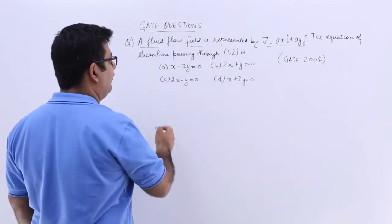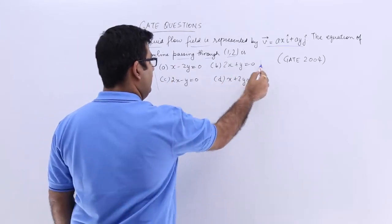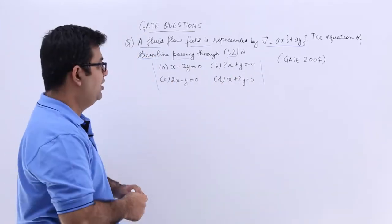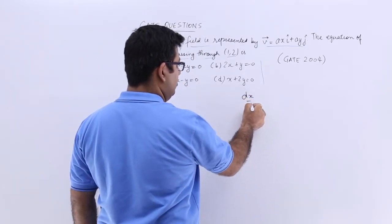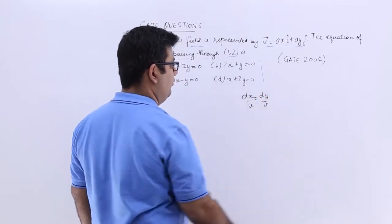The equation of the streamline passing through (1,2) is one of these four options. Now the equation of a streamline we know is dx upon u is equal to dy upon v.